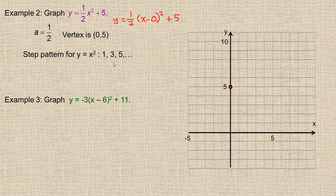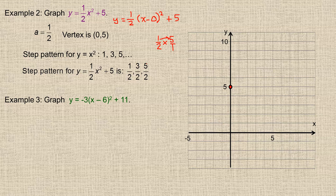And for the standard parabola, the step pattern is 1, 3, 5, so we multiply each of these by 1/2. So 1 times 1/2 would be 1/2, 3 times 1/2 would be 3/2, 5 times 1/2 is 5/2. And just to do one of those multiplications, if I have 1/2 multiplied by 5, 5 is the same as 5/1, so 1 times 5 is this 5, 2 times 1 is this 2 in the denominator. Now, for convenience, we could change these to decimals. So 1/2 is 0.5, 3 divided by 2 is 1.5, 5 divided by 2 is 2.5.